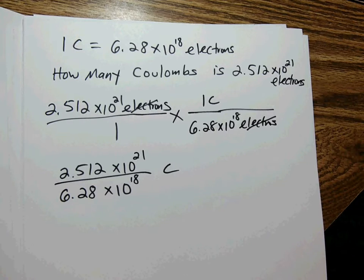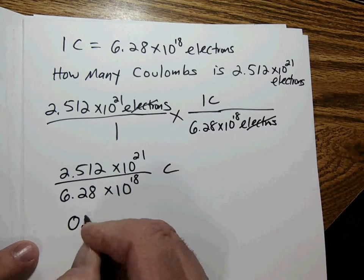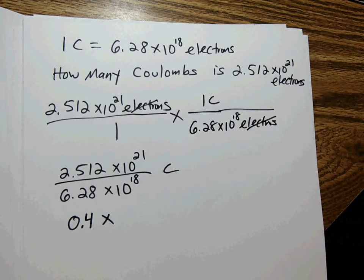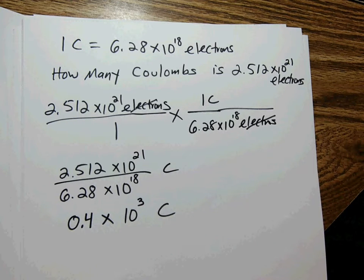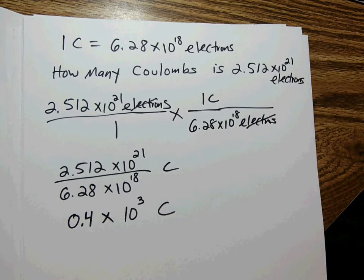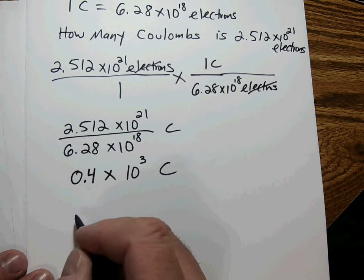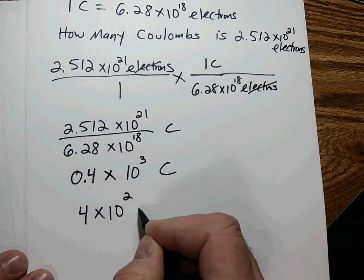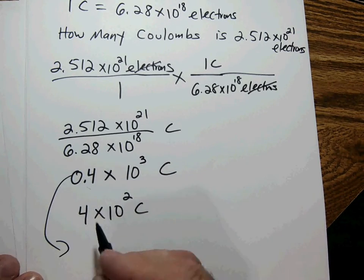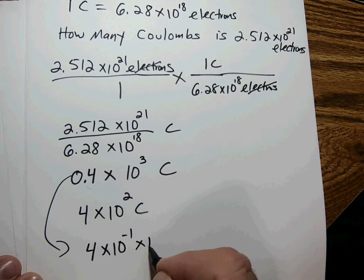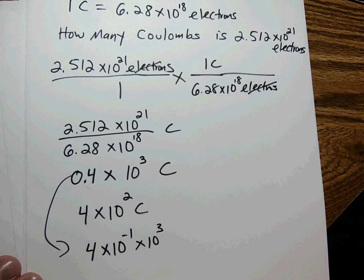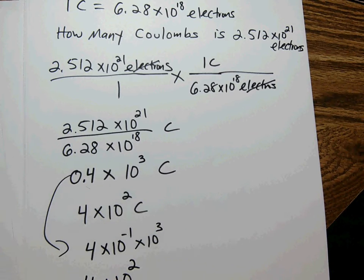Dividing the coefficients: 2.512 divided by 6.28 gives 0.4. Subtracting the exponents: 21 minus 18 gives 10 to the 3rd. So we have 0.4 times 10 to the 3rd — not scientific notation. Shifting the decimal: that's 4 times 10 to the negative 1, times 10 to the 3rd. Adding exponents: negative 1 plus 3 equals 4 times 10 to the 2nd power coulombs.